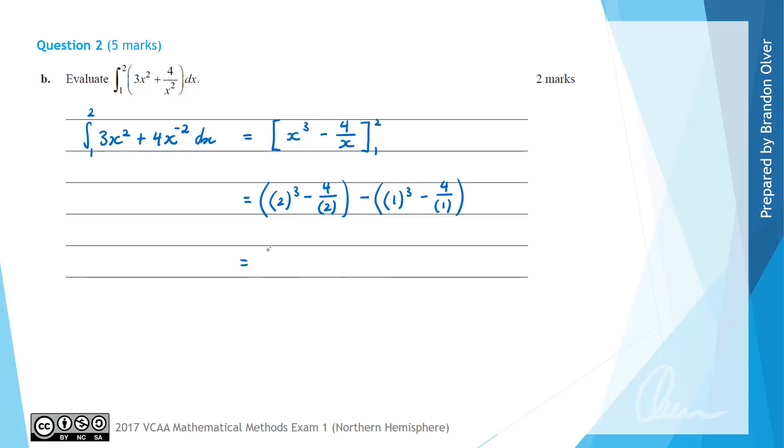Then we just need to simplify this. 2 cubed is 8 and we're going to have 8 minus 2 in the first bracket because 4 divided by 2 is 2. Then we subtract away 1 subtract 4 in the second bracket and that just turns into 6. Then it will be subtract negative 3 so it will be 6 plus 3 which equals 9. That is the answer to part B.